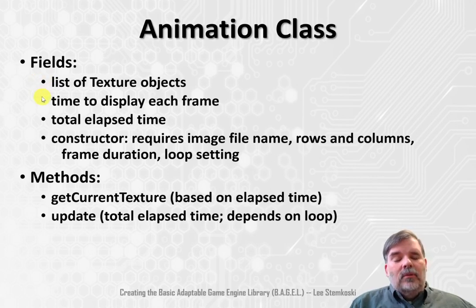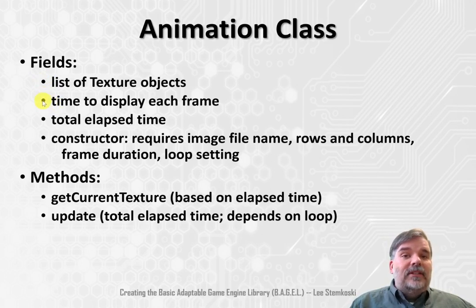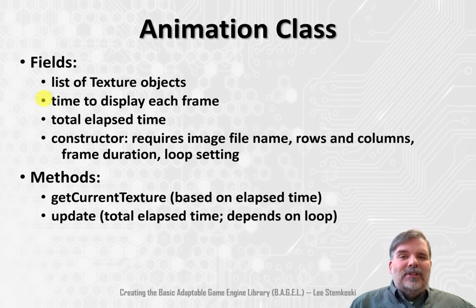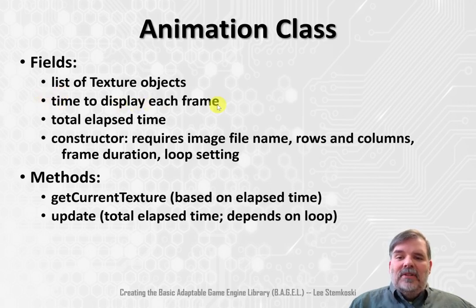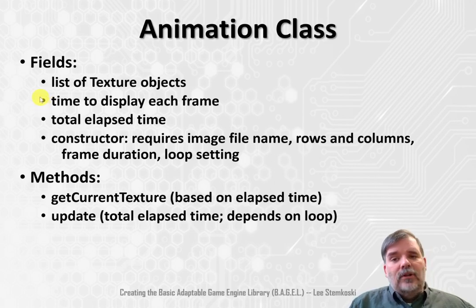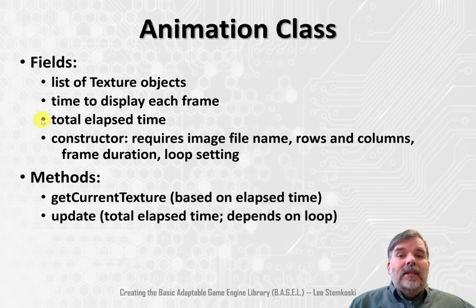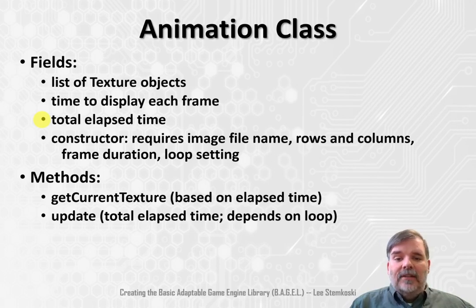Within the animation class, it will also be important to store the time that each frame of the animation will be displayed. Generally, this will be a very small number. To create a realistic animation, we probably want to do between 10 and 20 frames per second, so the time to display each frame will likely be between a tenth of a second and a twentieth of a second. We'll also store the total elapsed time — that will be the total amount of time the animation has been playing, and that will help us determine which frame should be displayed.